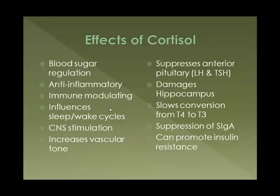Cortisol can damage the hippocampus, which is a part of the brain that controls some higher functions. It slows conversion from T4 to T3. T4 is the inactive transport form of thyroid hormone; when it gets out to the tissues it gets converted to T3, which is the active form. So it can slow conversion from inactive to active thyroid hormone, making you feel hypothyroid even when the thyroid is producing plenty of T4. You can also have suppression of sIgA, the antibody secreted into the digestive tract to protect you — that's partly how cortisol blunts the immune system. It can also promote insulin resistance, which is what leads to type 2 diabetes.